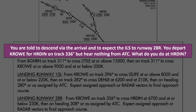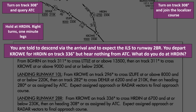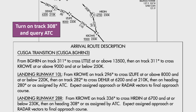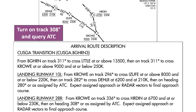Next question: you're told to descend via the arrival and to expect the ILS to runway 28R. You depart Crow for Harden on track 336, but hear nothing from ATC. What do you do at Harden? Turn on track 308 and query ATC? Turn on track 308 and join the localizer course? Hold at Harden, right turns, one-minute legs? Or fly an intercept heading for the localizer course? You have not been cleared for the ILS approach, even though you're told to expect it. The instruction on the arrival is to leave Harden on a track of 308 and await ATC instruction, which is what we'll do, and query ATC if we don't hear anything. If this becomes a true lost communication scenario, we can then decide to perform the expected approach and join the localizer course, but not before trying to get back in touch with approach.